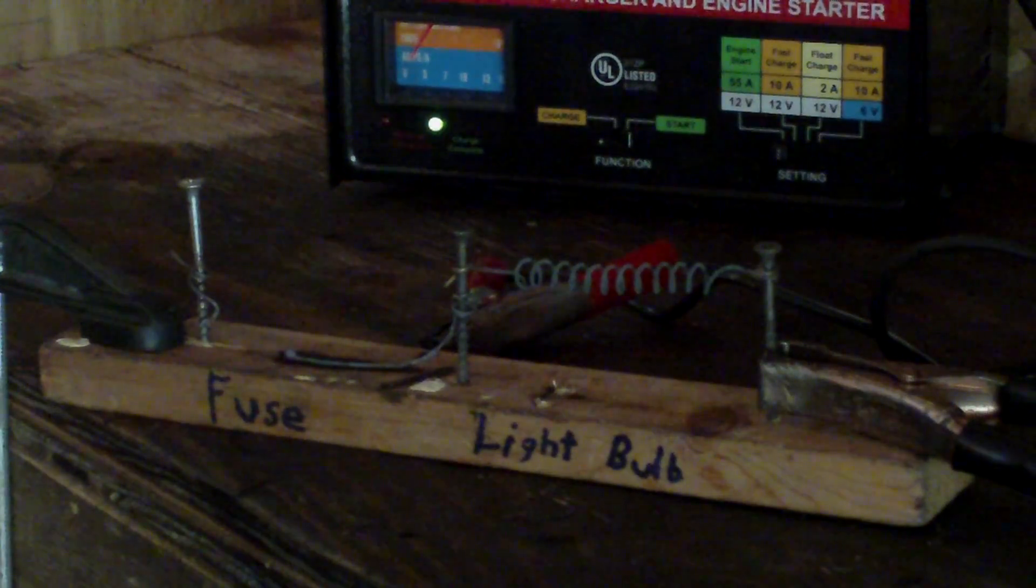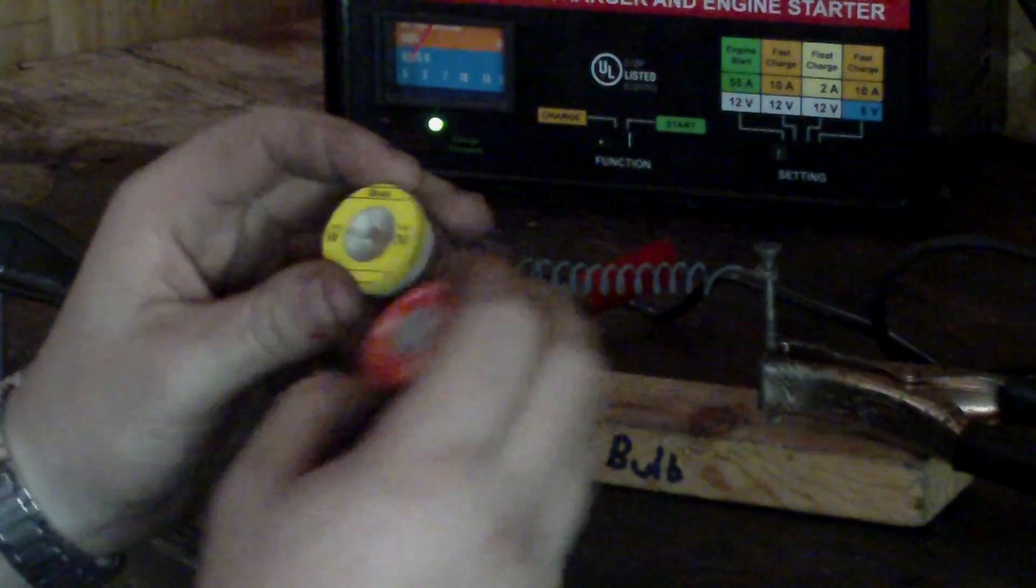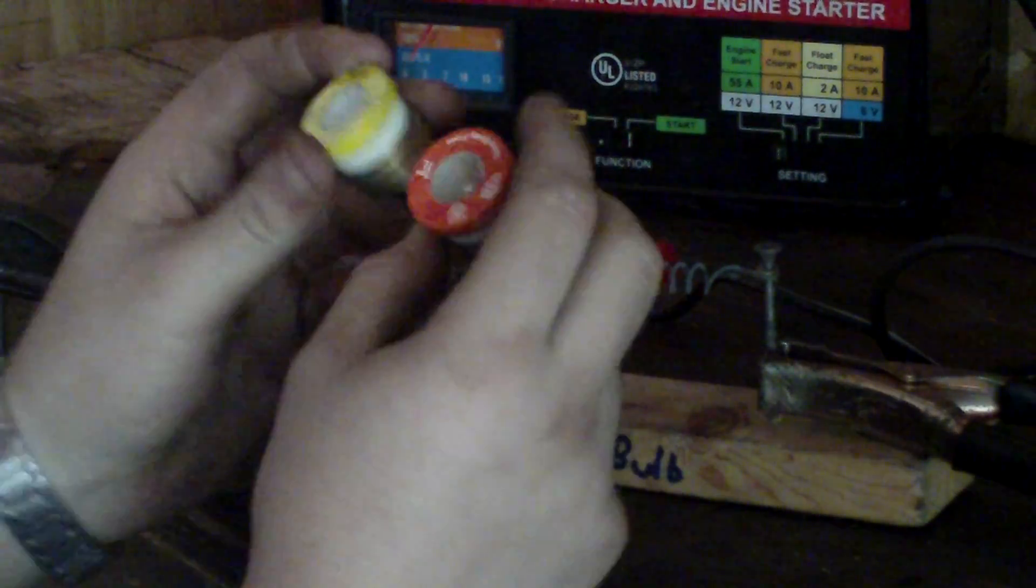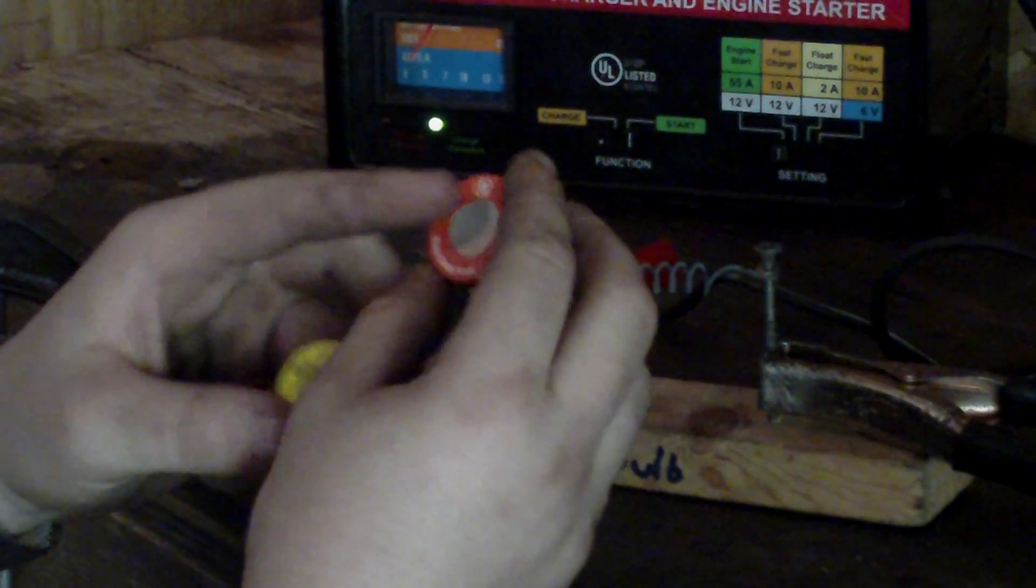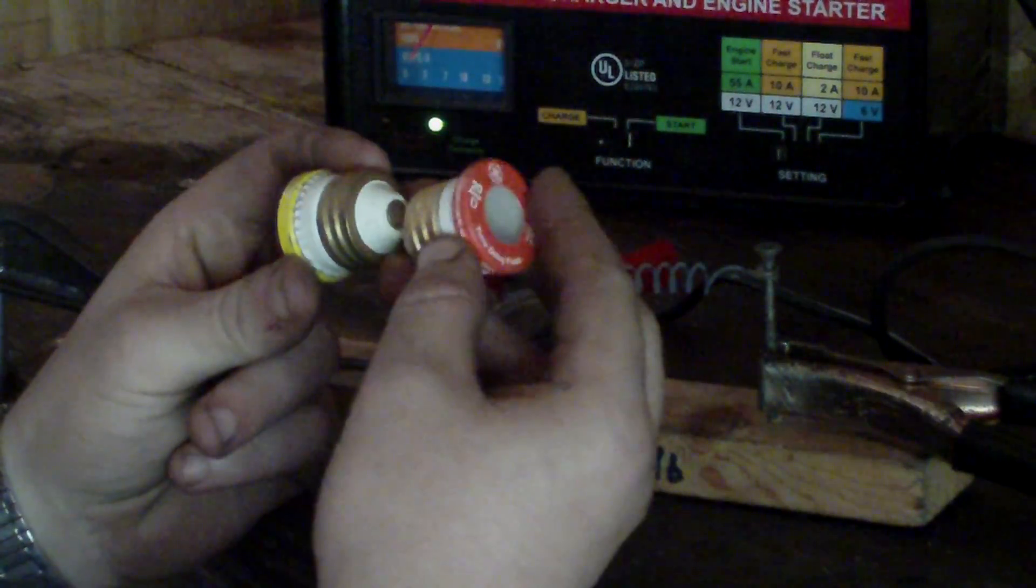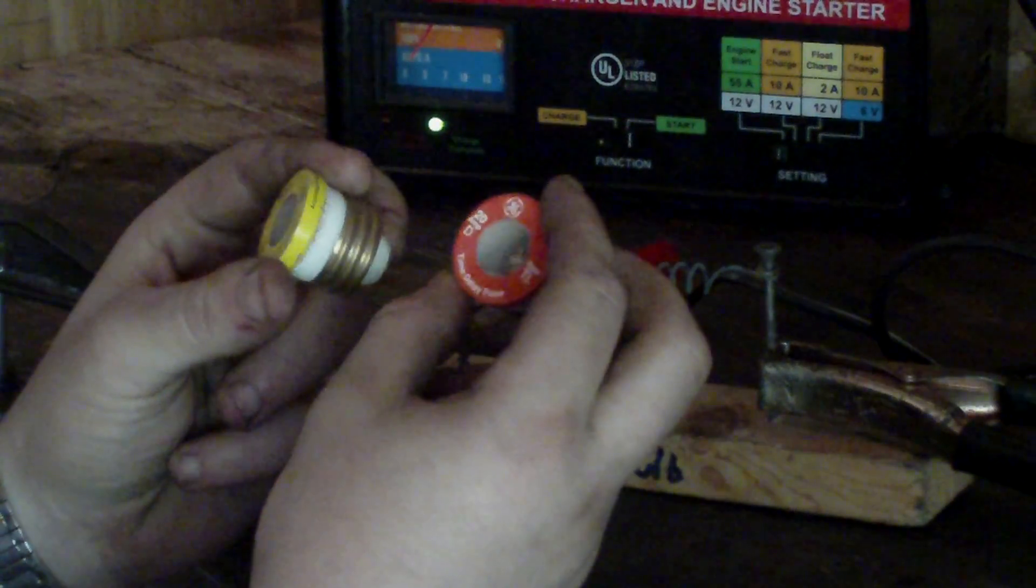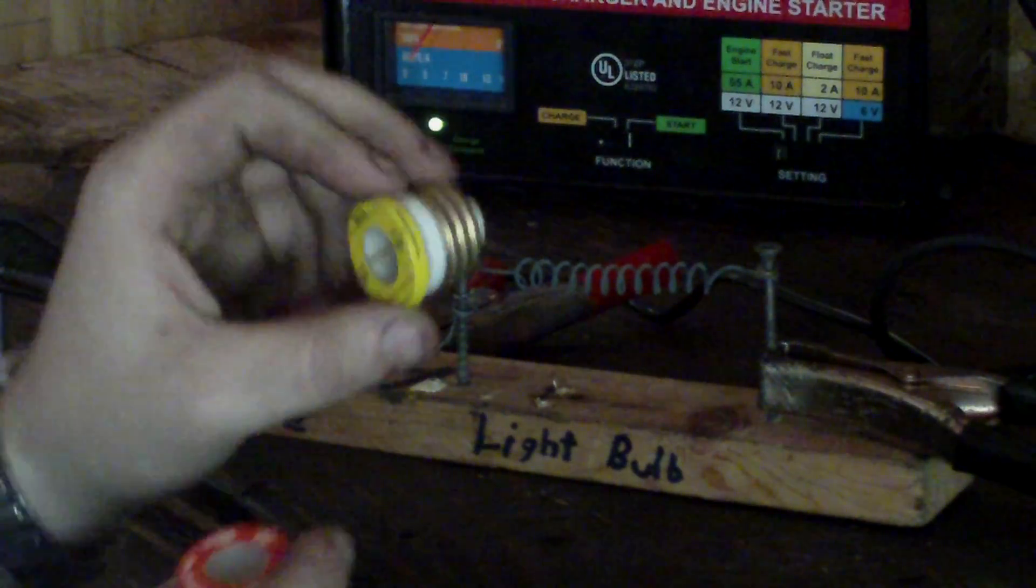And your fuses come in different sizes and shapes. Your smaller fuses that are in older homes were these Edison type fuses. This is a 30 amp. This one's a 20 amp. And that brings up another point. If your house has fuses and you blow a 20 amp fuse, a 30 amp fuse will screw into it.